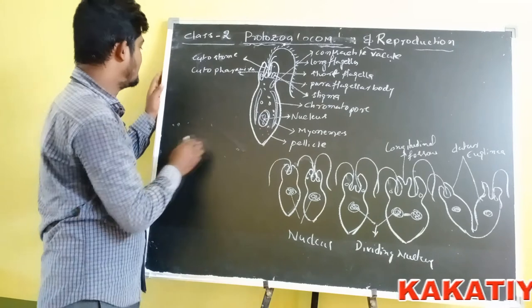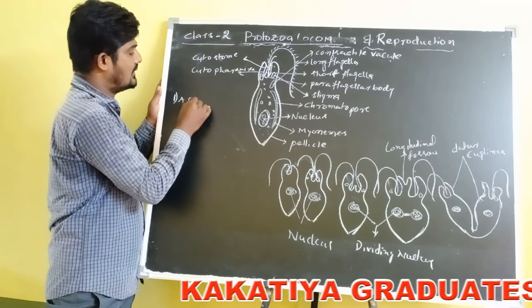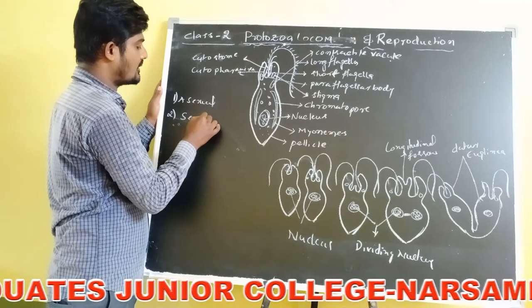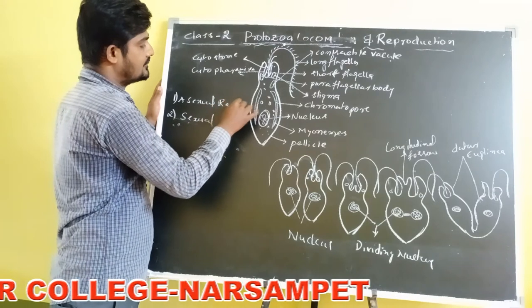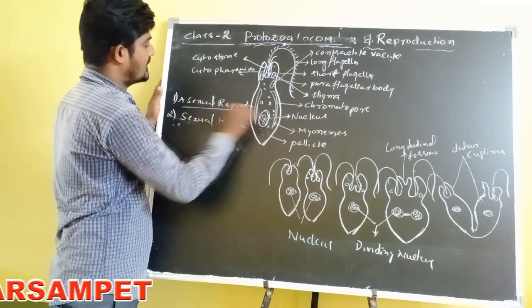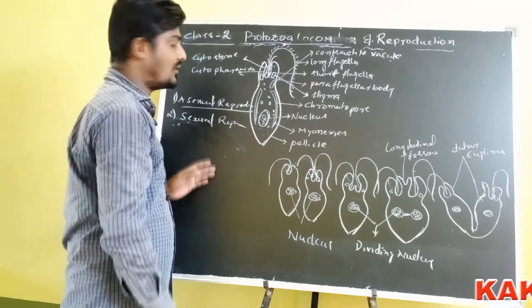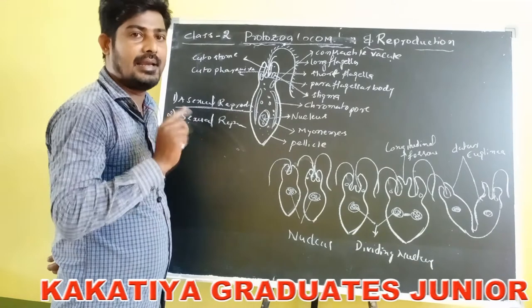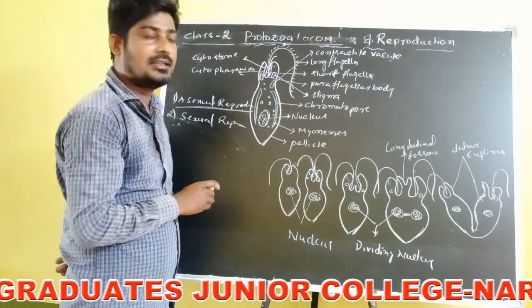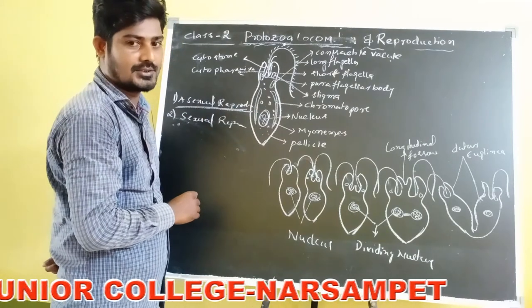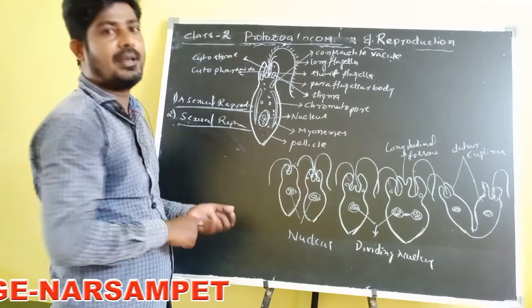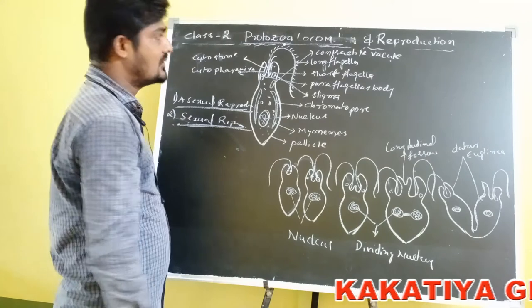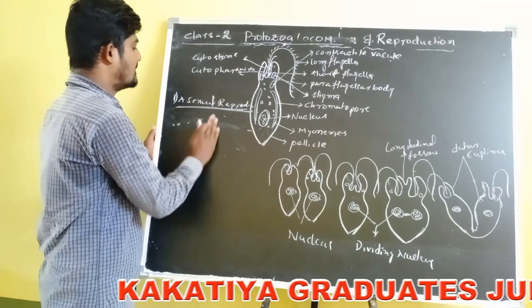Reproduction is of two types in organisms. Number one is asexual reproduction, and number two is sexual reproduction. Asexual means a single parent produces offspring without the involvement of gametes — that is called asexual reproduction. Sexual reproduction means fusion of male and female gametes to produce offspring. In this class, we discuss asexual reproduction in protozoa.